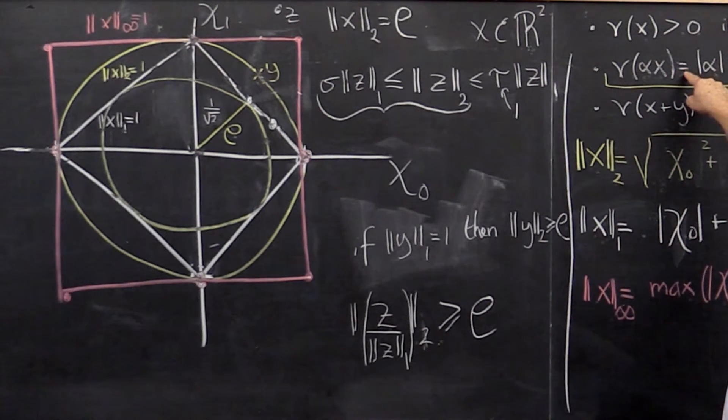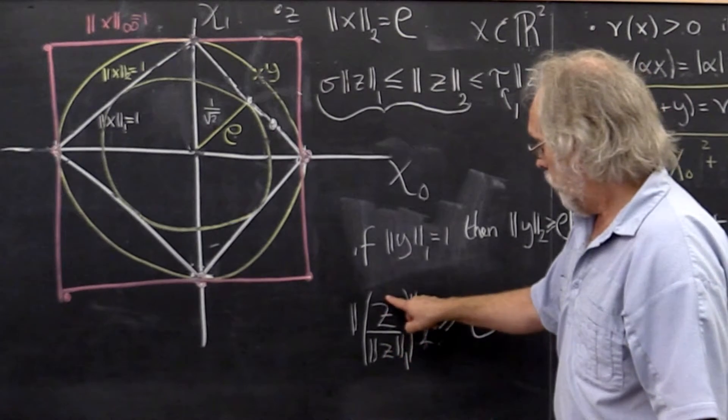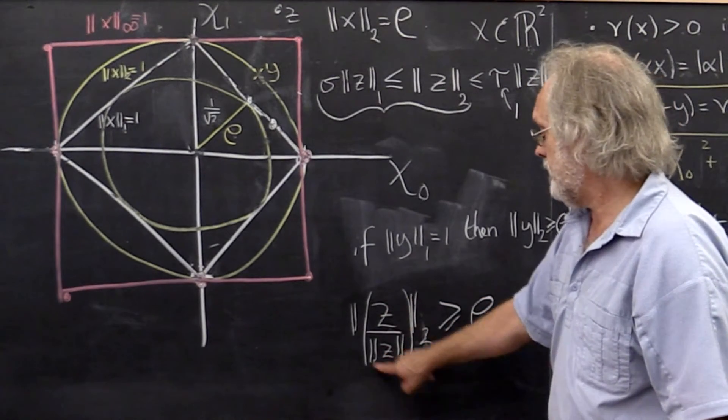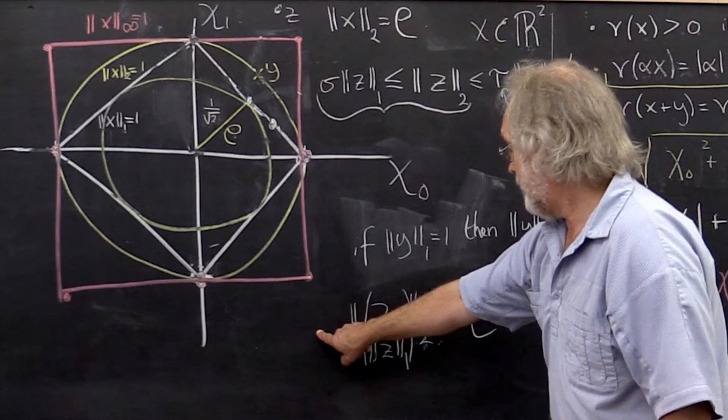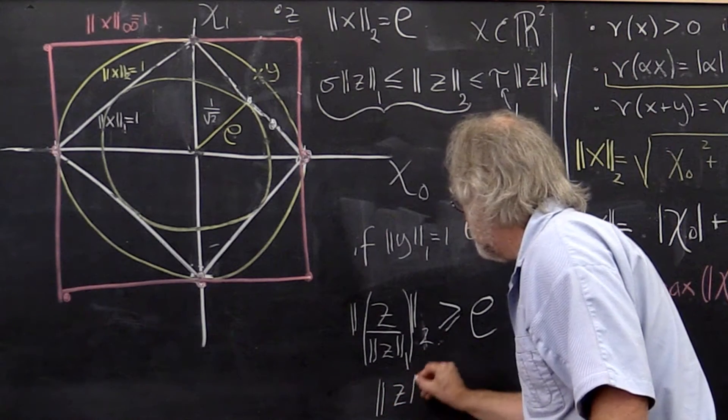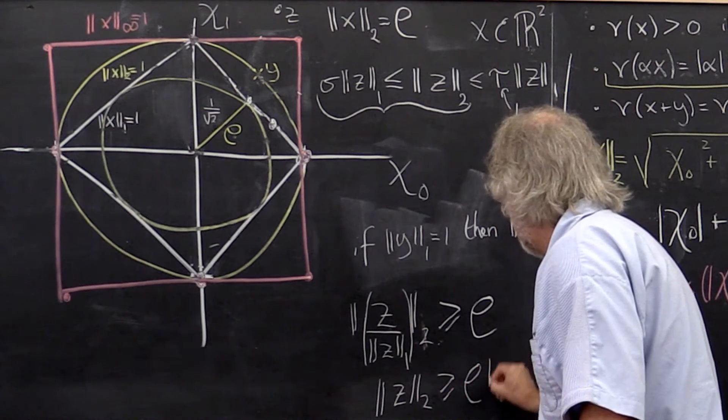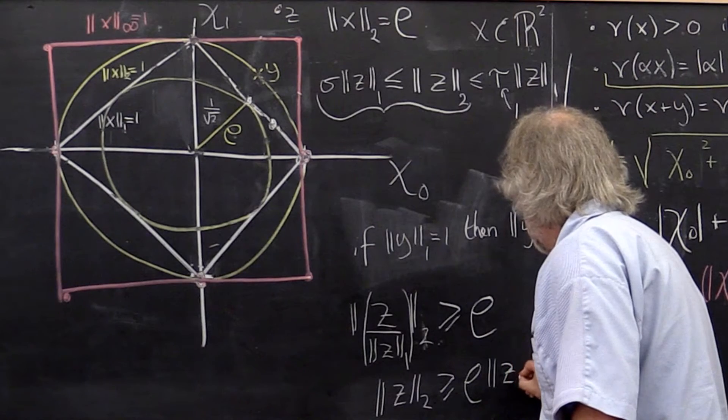But because norms are homogeneous, we can then say the 1 over the 1-norm of z we can bring outside and then we can bring it to the other side. So we conclude that the 2-norm of z is greater than or equal to rho times the 1-norm of z.